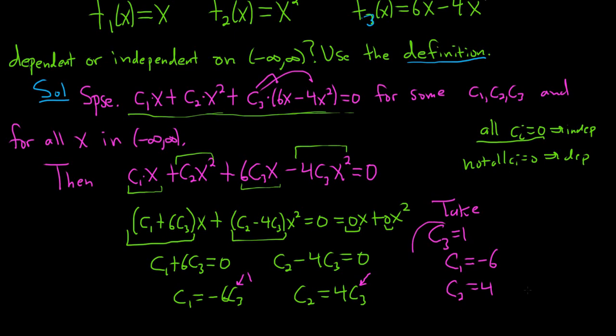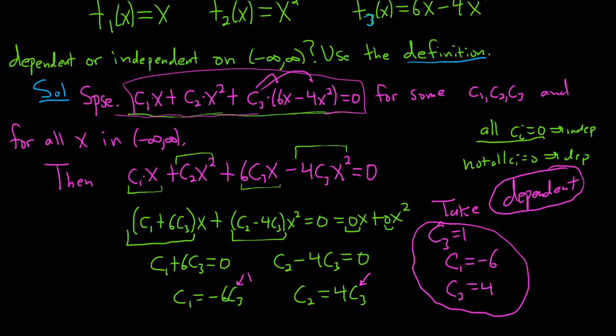So we found constants, not all 0, such that this equation is true. So that means that the answer is dependent, which we knew from the beginning. But the purpose of this problem is to do it using the definition. So start by assuming you have a linear combination for some c1, c2, c3, and for all x.